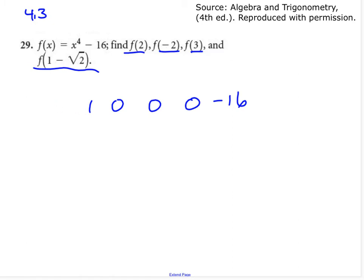So let's try f of 2. So put a 2 on the outside, bring down the 1, and then multiply, add, multiply, add, multiply, add. 1 times 2 is 2, add, that's 2.